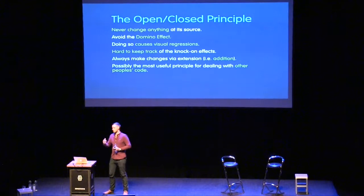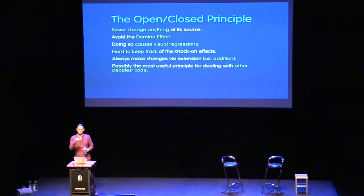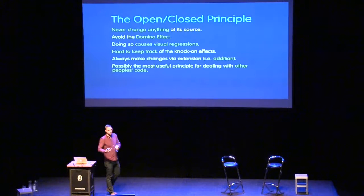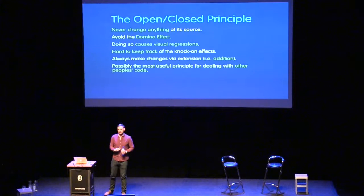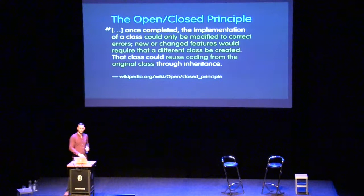For example: it's June, you build some buttons, push to the shared repository, and everybody starts using them. Fast forward to December — you decide to change button padding from `1rem` to `1.5rem` and push up. All of a sudden everybody gets this change forced upon them. There's a huge domino effect because you went back and changed something at its source — you're not giving people the option to opt in. This causes visual regressions, collisions, and knock-on effects that are really hard to track.